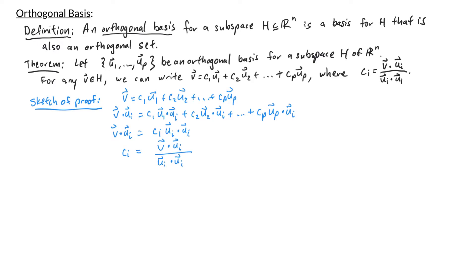This theorem lets us write v as a linear combination of u1 through up very easily. Remember, if the basis were not orthogonal, you would need to form an augmented matrix and row reduce to find the weights c1 through cp. But with an orthogonal basis, all you have to do is take dot products.